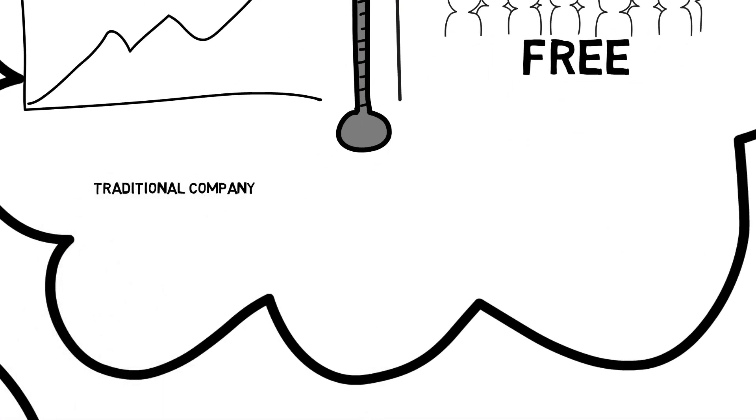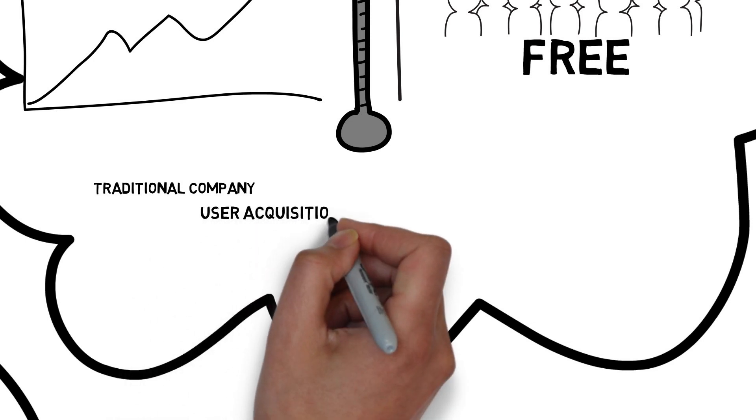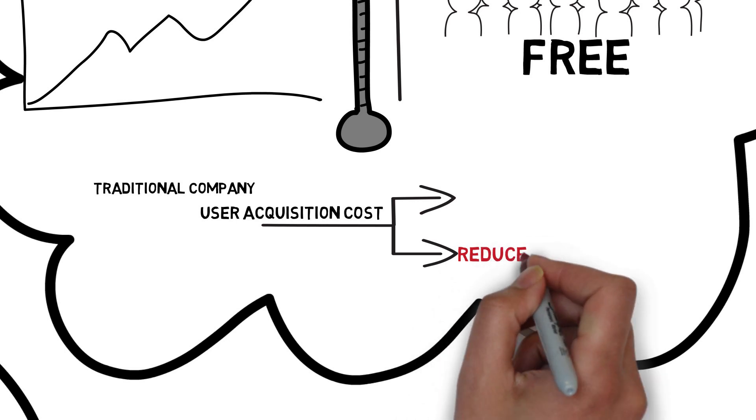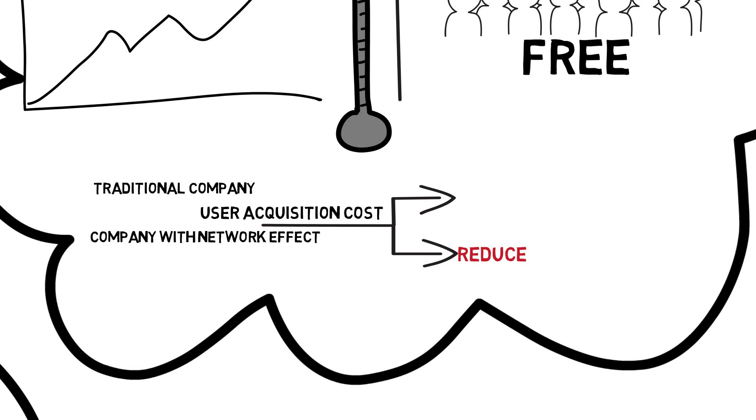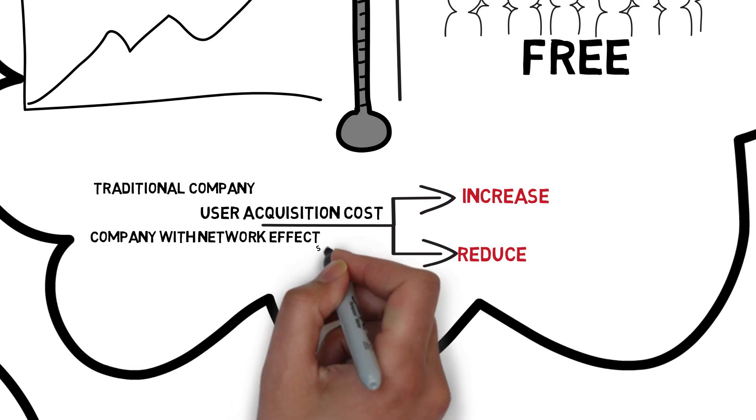For traditional companies, as the market becomes saturated, vendor acquisition application costs will drop further. However, for companies with their own networking capabilities, the reverse is true. As the network continues to expand, user acquisition costs remain the same or can even decline.